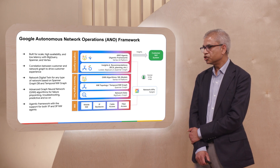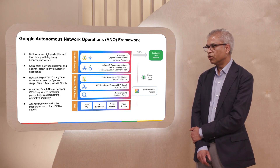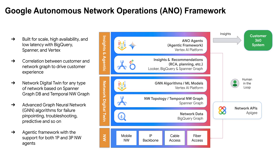This picture shows the technology stack for the autonomous network operations framework. It is built for scale, high availability, and low latency. It uses BigQuery for data, Spanner for graph, and Vertex for all the ML models. There will be an opportunity to correlate customer experience with the network graph in order to pinpoint a problem, inform the customer that there is an issue, how it will be solved, and what the ETA is.